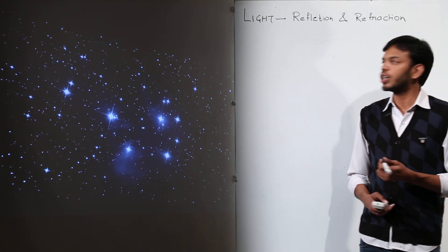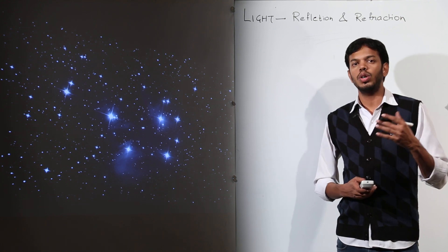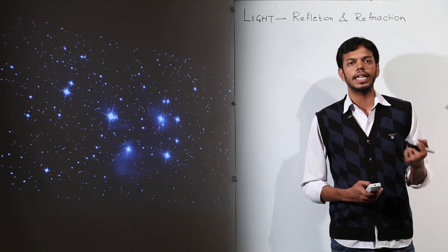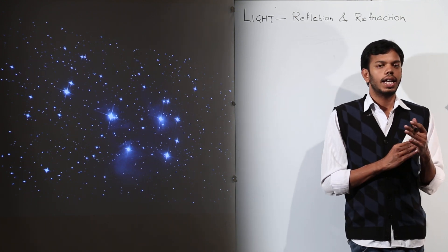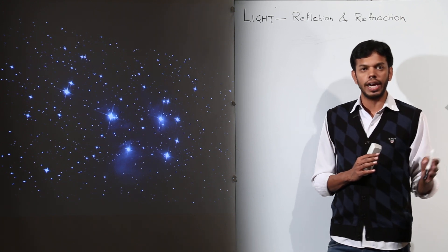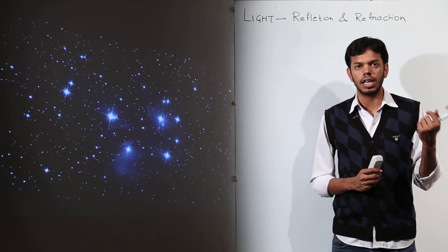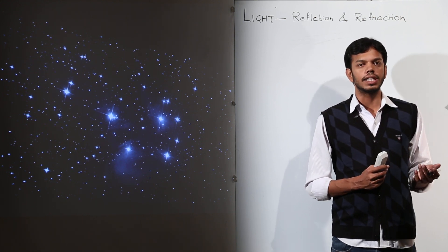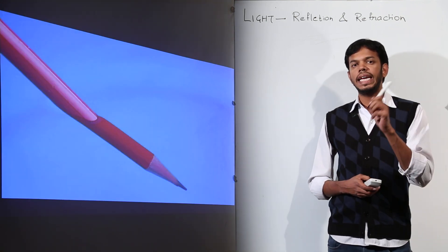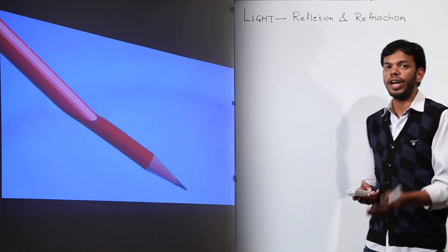We are moving to the next part of this chapter — refraction. Have you ever wondered why you see twinkling stars at night? Planets do not twinkle whereas stars twinkle. Also, when you place a pencil inside a tumbler filled with water, it appears to be bent from the point which is inside the water.